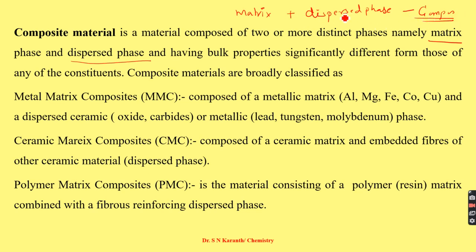The composite material's properties are entirely different from the individual components. Composites are broadly classified into three categories. The first is metal matrix composite (MMC), where the metallic matrix is usually aluminium, magnesium, iron, cobalt, or copper, and the dispersed phase is usually ceramic oxides, carbides, or metallic phases like lead, tungsten, or molybdenum. The second category is ceramic matrix composite, consisting of a ceramic matrix with embedded fibers of other ceramic materials.